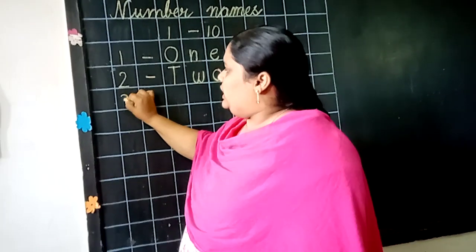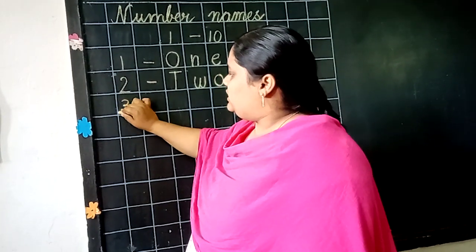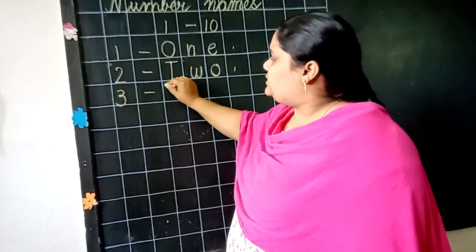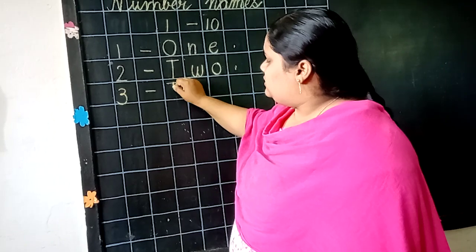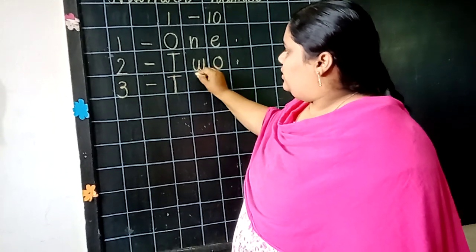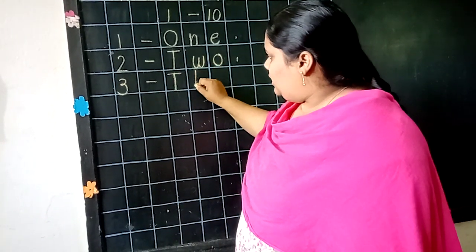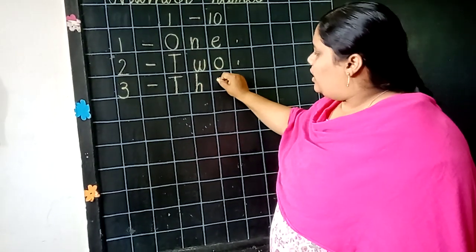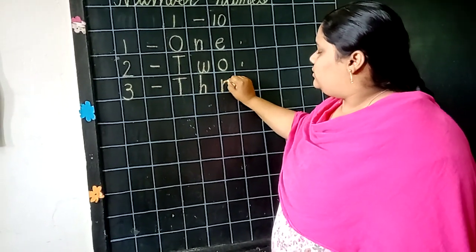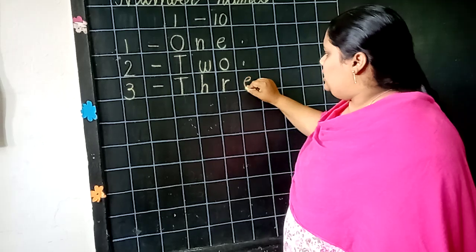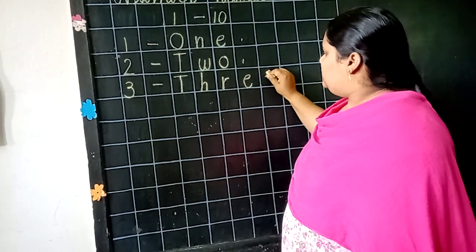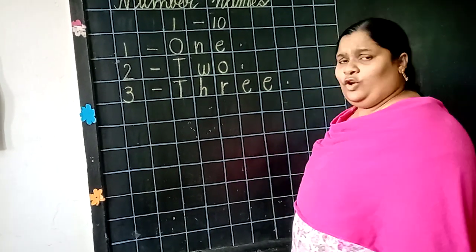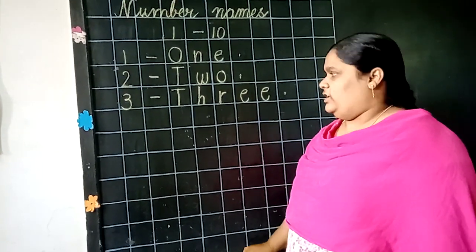3. What is this? 3. What is the spelling of 3? Can anyone say? Yes. T, H, R. Next. E. Next. E. Very good. You all remember it, eh? Very good.